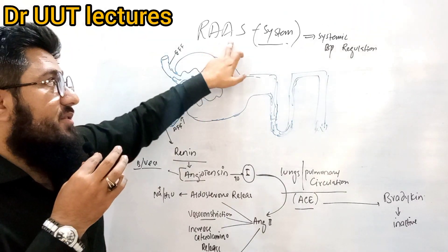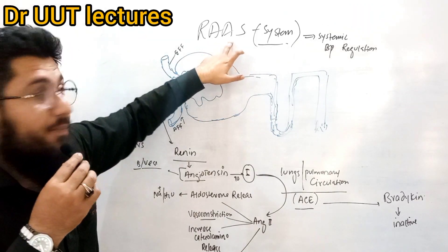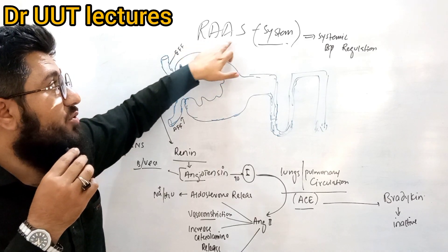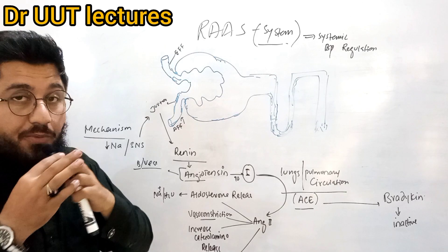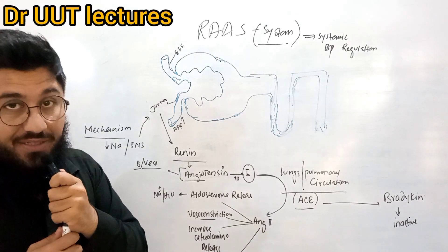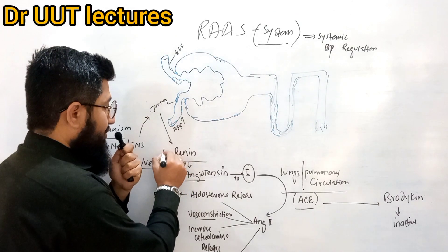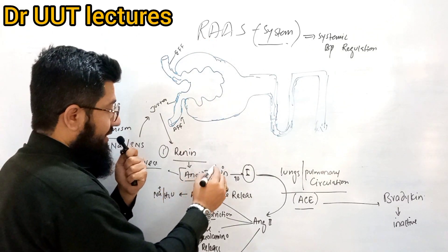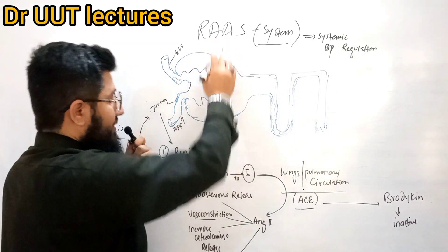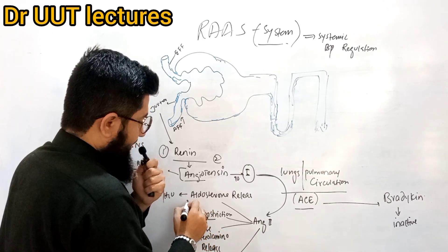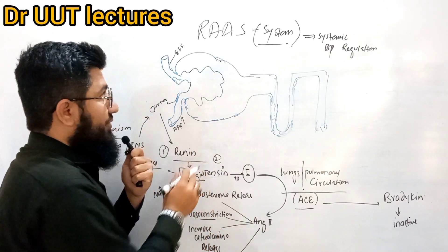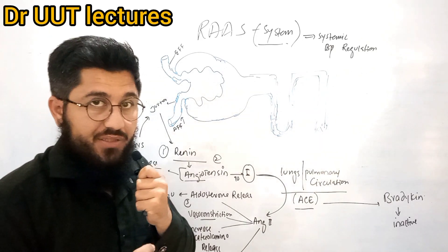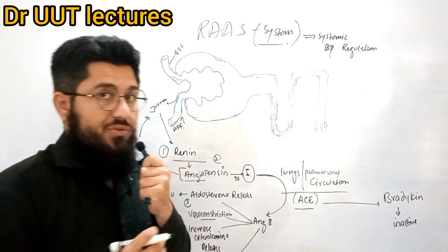So the very first point — RAS. What is the full form of the name? It stands for Renin, Angiotensin, Aldosterone System. So three very important functional points: number one is renin, number two is angiotensin, and number three is aldosterone. All three together make up this particular system — the RAS system.